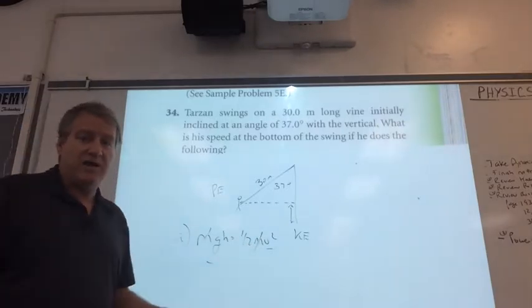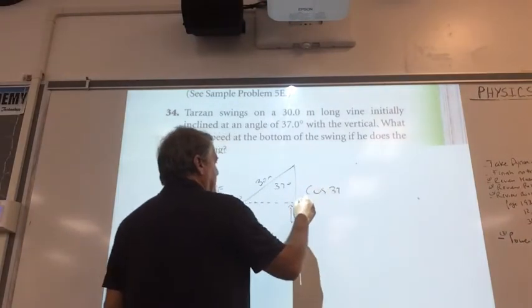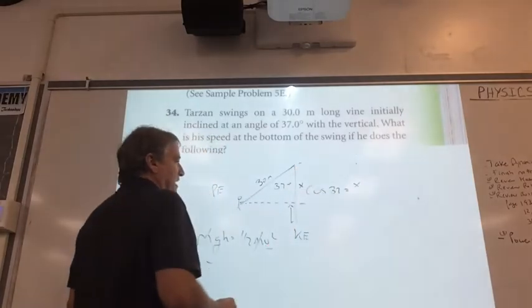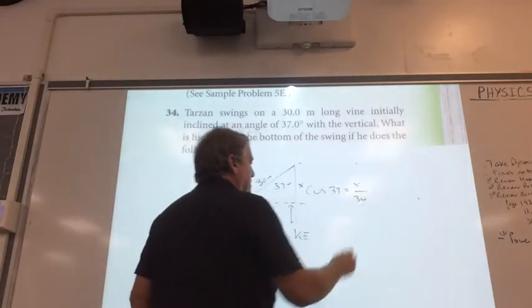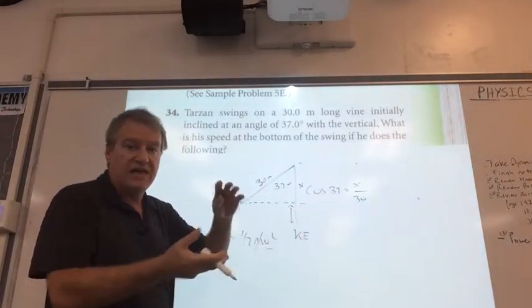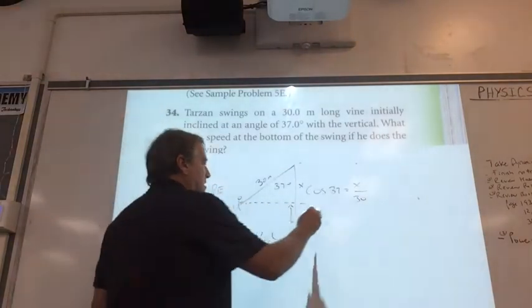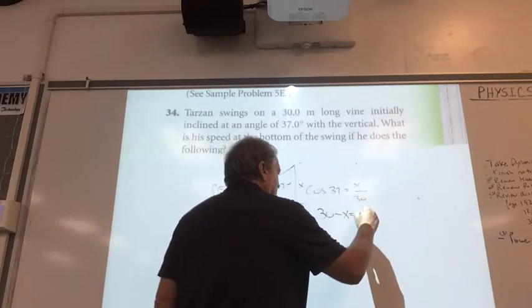This is where a little bit of geometry comes in. The cosine of 37 equals this distance x over the hypotenuse. So cosine of 37 times 30 tells us this height. Now how do I know how far he's dropping? We go 30 minus x, and that equals the height he's falling.